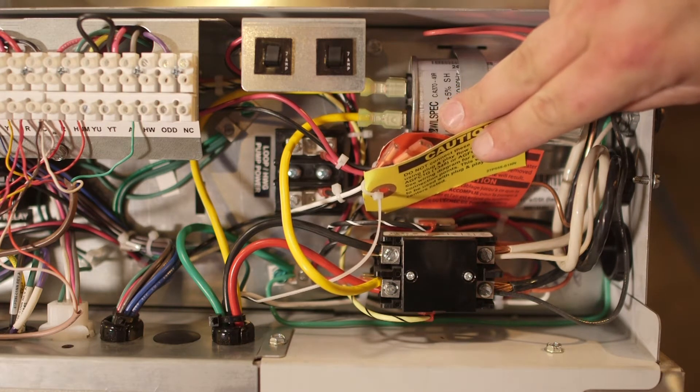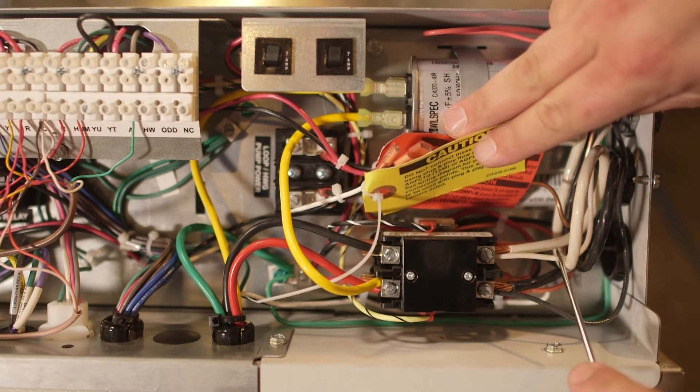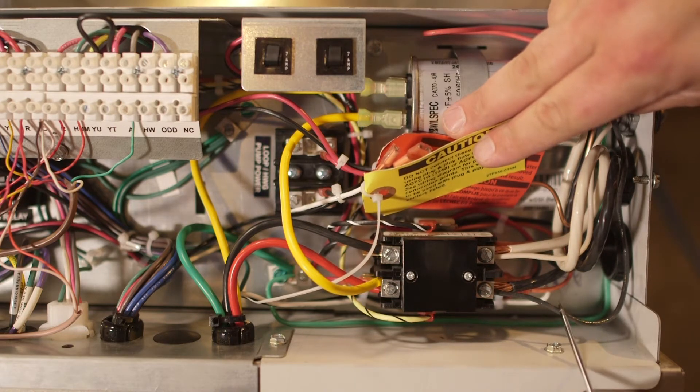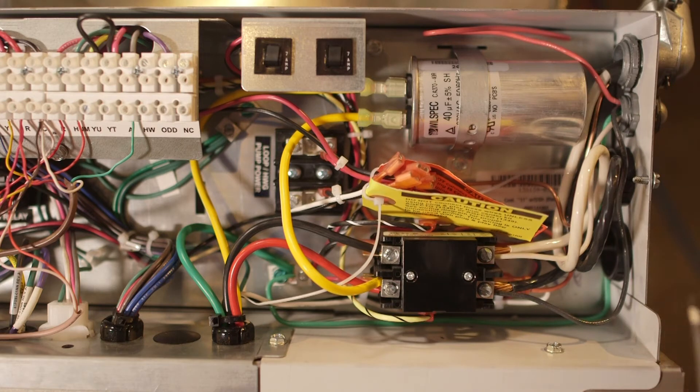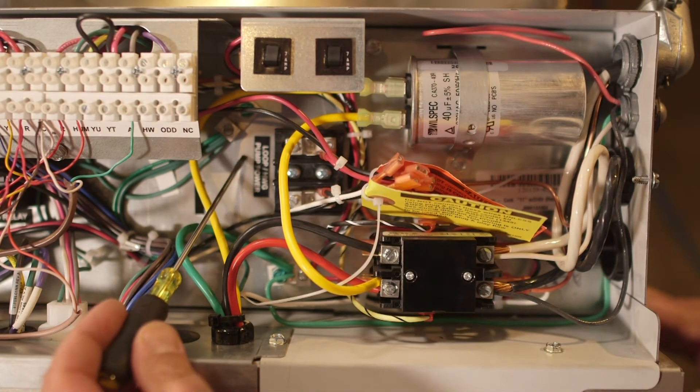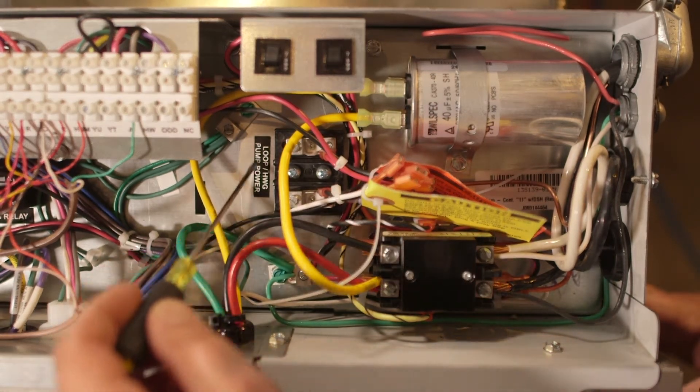Now, if you have the two pump flow center, this is really important, because the variable speed pump will still need to have the 240 volts all the time. However, the single speed pump that is also on that flow center will hook to your standard pump location. And on this particular unit, it happens to be right here.